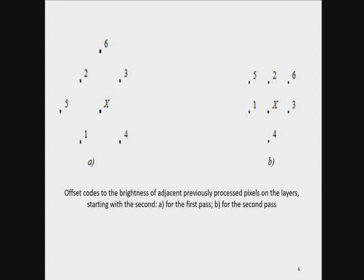In the first passes, the four closest contiguous previously processed pixels are arranged diagonally — these are pixels from the previous layers, and therefore they have large offsets in the dictionary, and the same sequences in the image that start with them can generally be scattered throughout the dictionary. The fifth and sixth offsets for the first pass encode the nearest processed pixels of the same pass horizontally and vertically respectively. But in the dictionary, the offset of the nearest vertical pixels is increased by the number of pixels in the pass line.